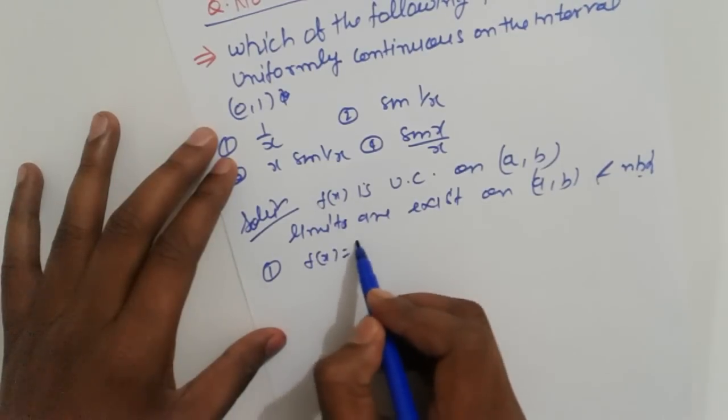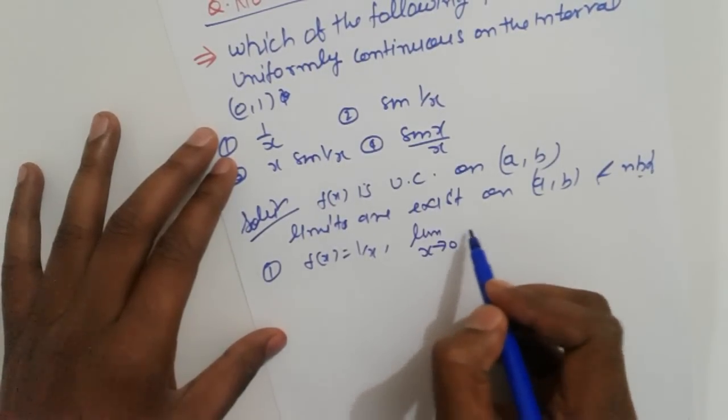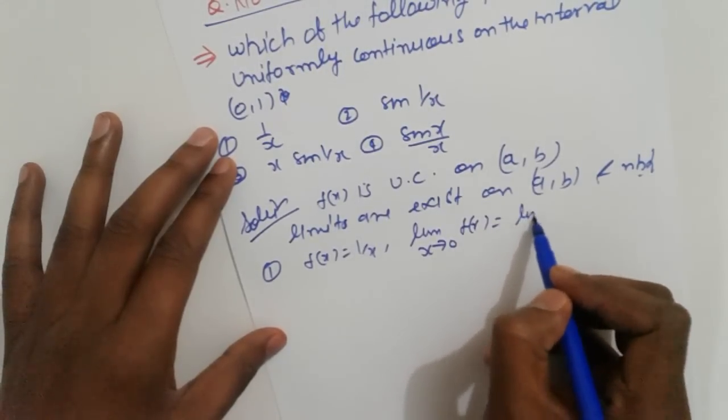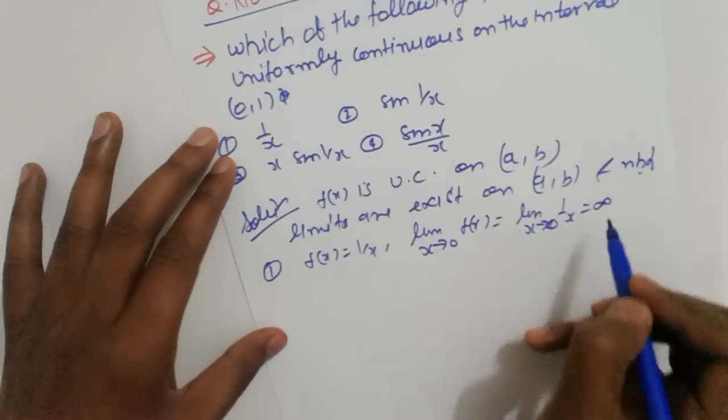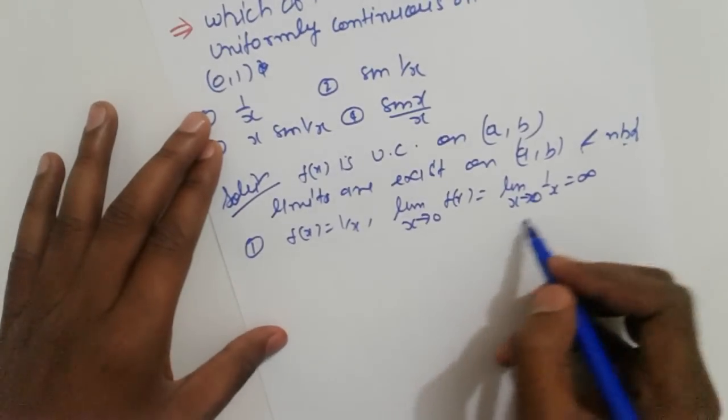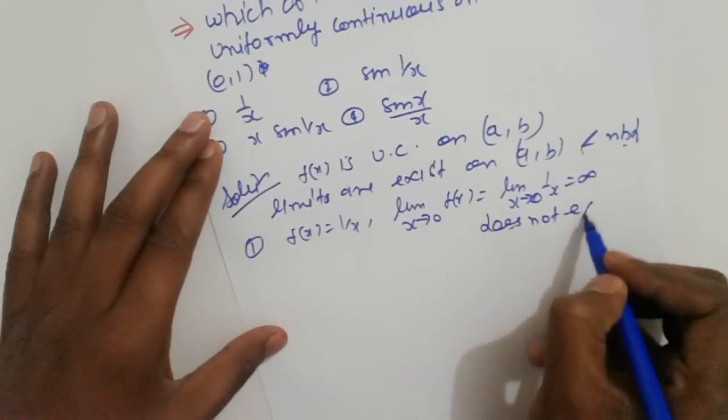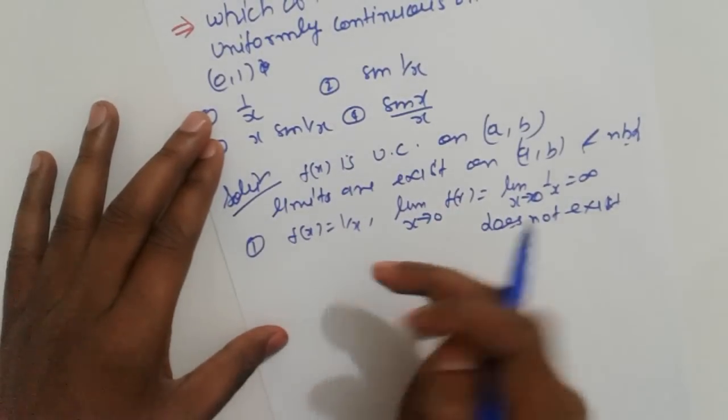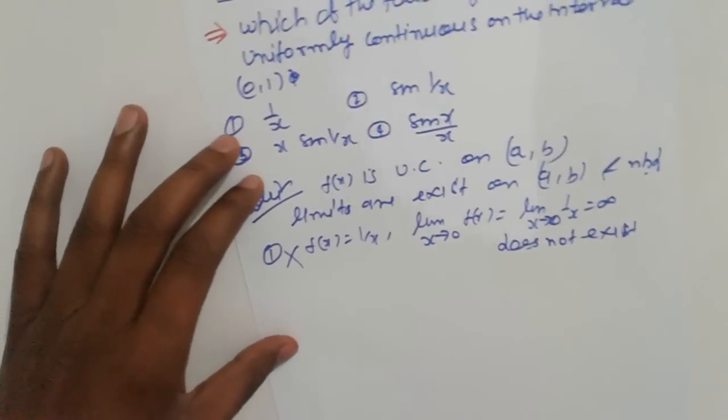First, here f(x) = 1/x. So limit first, as x tends to 0, f(x) means limit x tending to 0 of 1/x. That is infinity, so the limit does not exist. Does not exist. So we do not need to check further. So that is wrong.